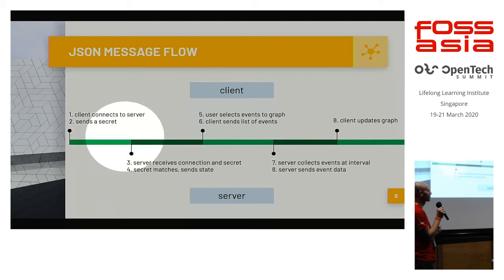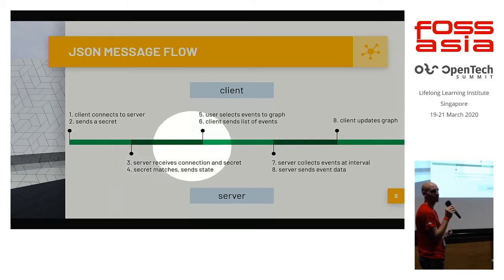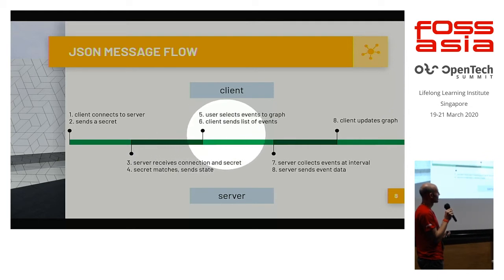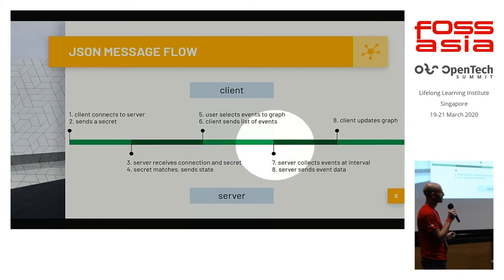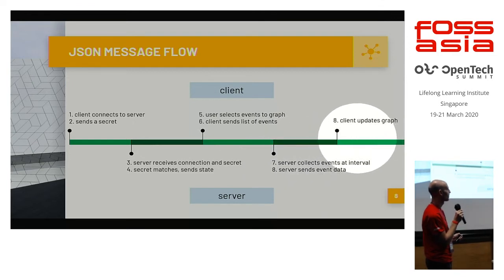I have a simple handshake for signing on from the clients. I then send state — for example, any information needed for drawing the UI on the clients. The client will then ask which events to show, and we'll transmit those events at regular intervals. Rendering then occurs on the clients.